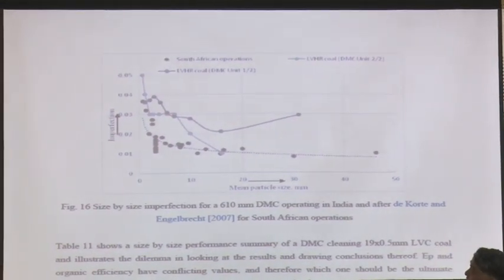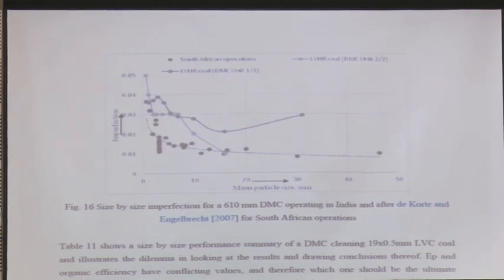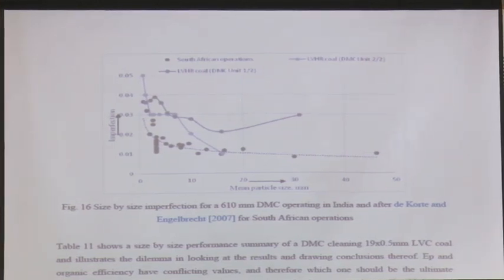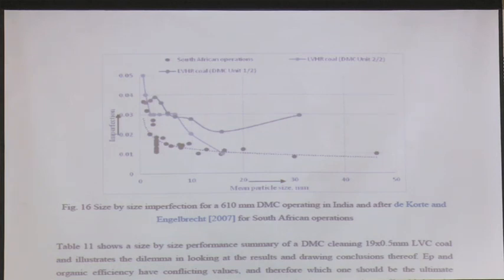For South African operations, what we call size-by-size recovery efficiency expressed through classical concepts of EP and imperfection — you will get a lot of published data on EP and imperfection in literature, but very little on organic efficiency. Why give so much emphasis on organic efficiency? Because the plant operator sells — organic efficiency is about washing performance. But the buyers are buying based on calorific value or ash content, so organic efficiency is purely a commercial term from the plant operator's perspective.